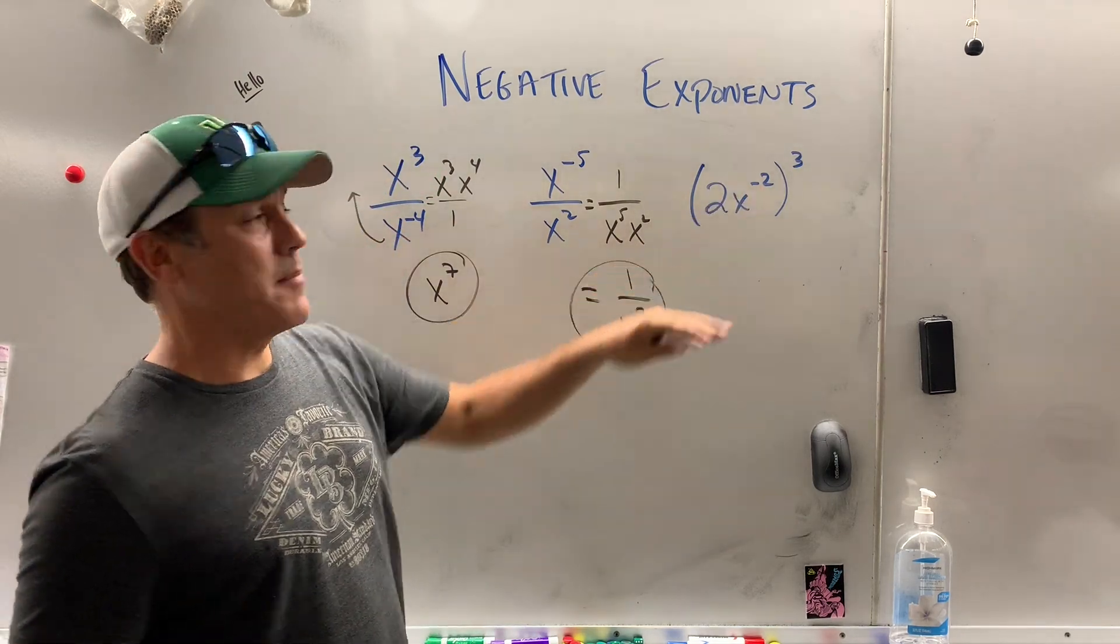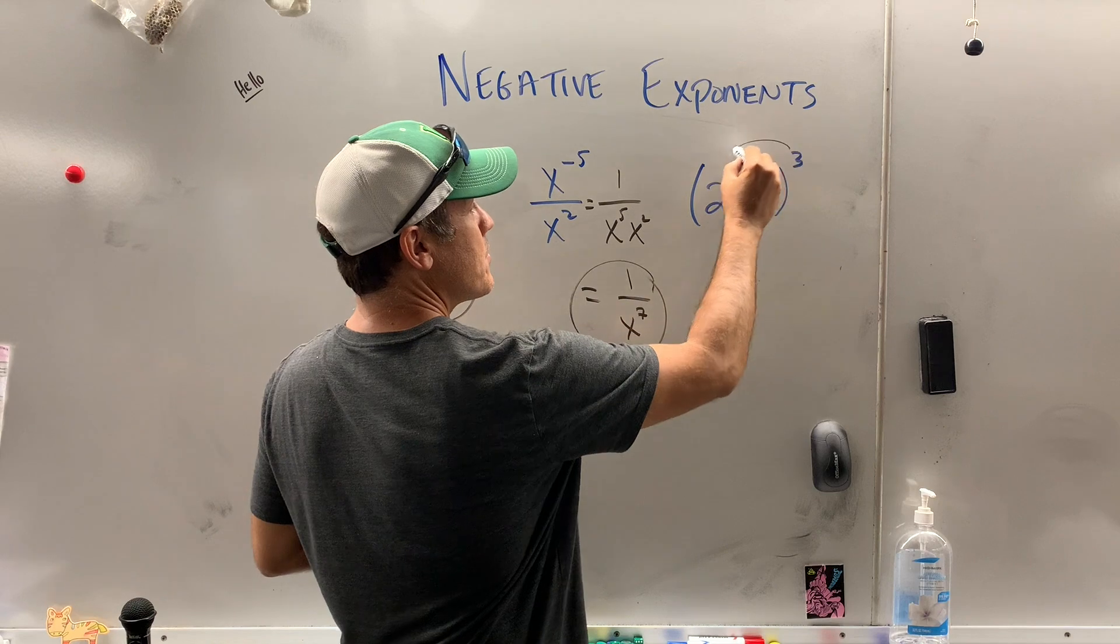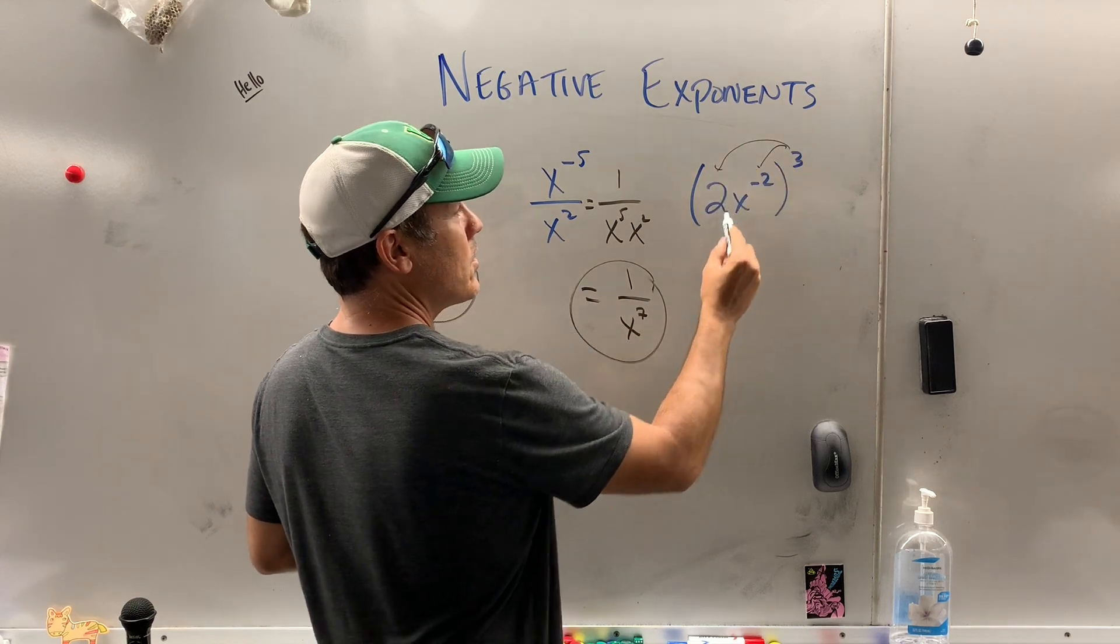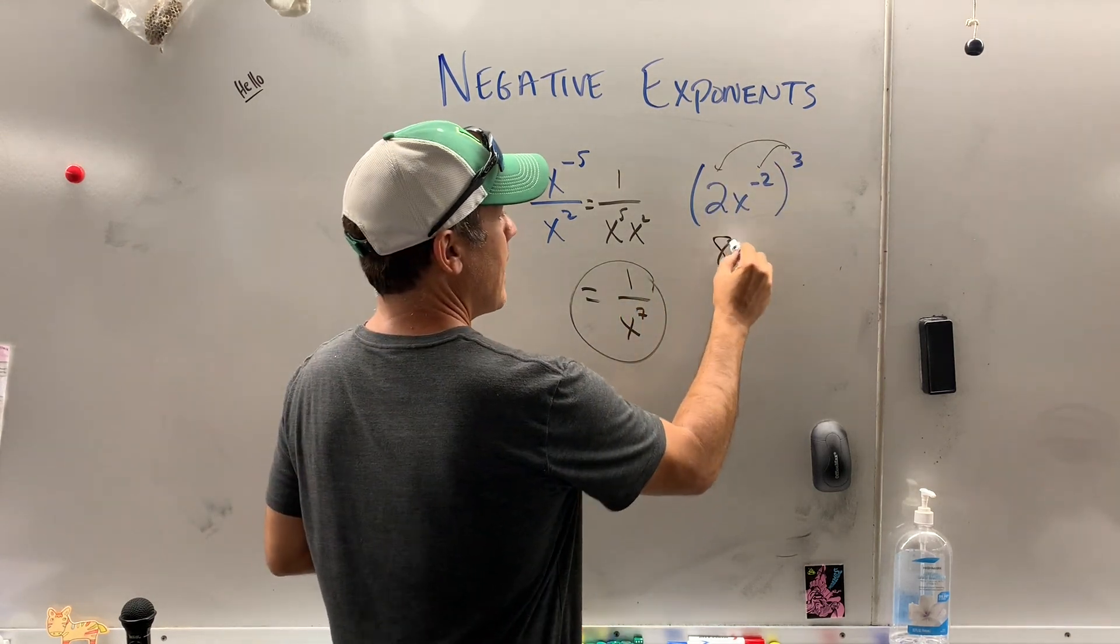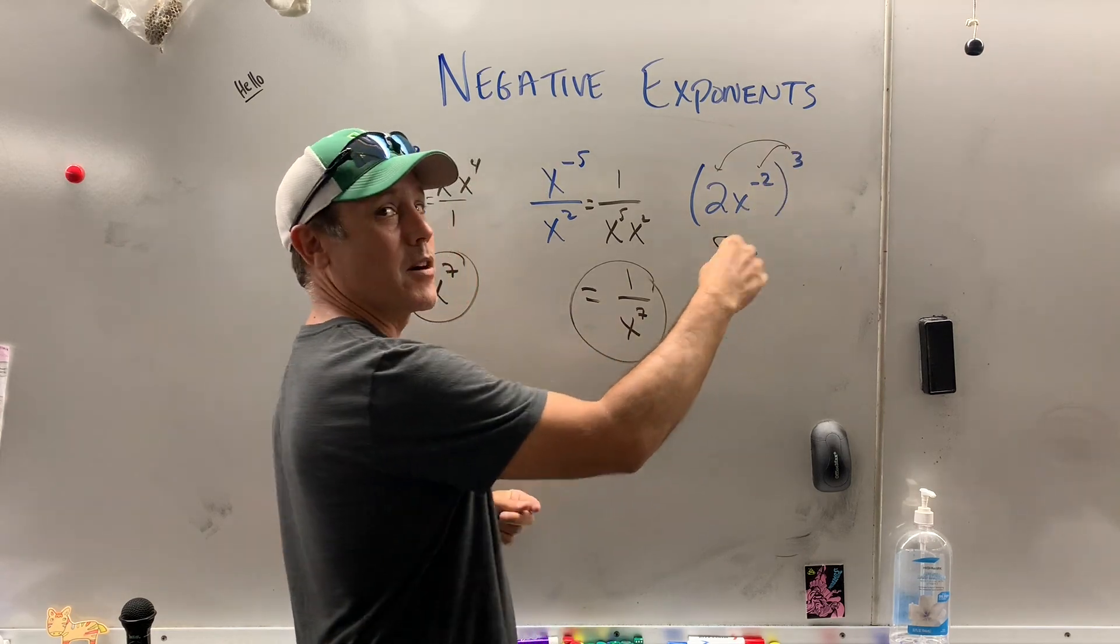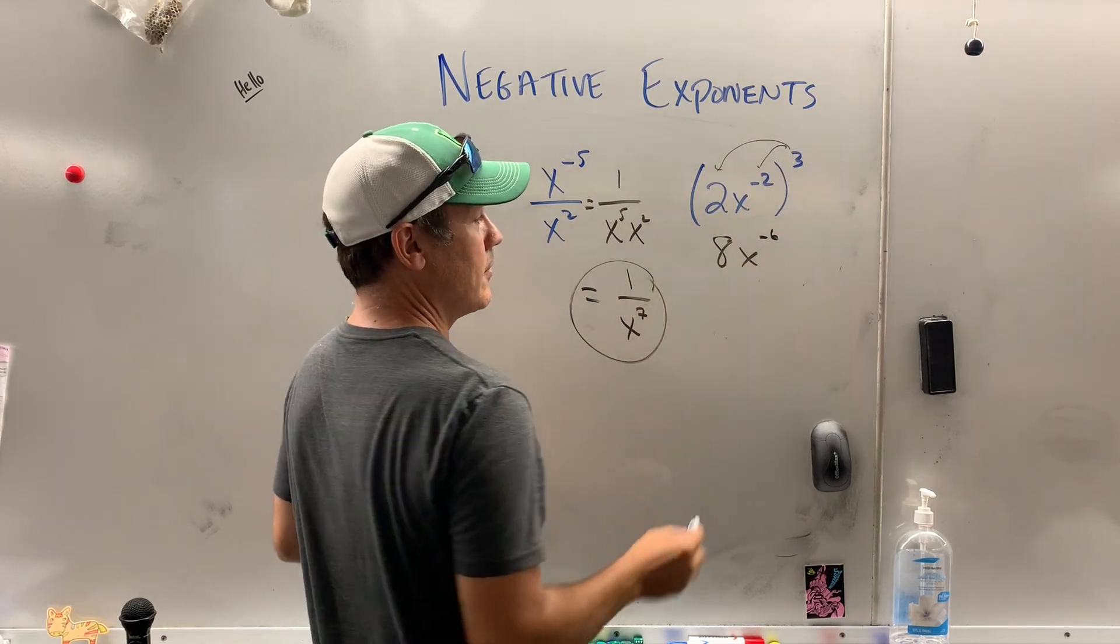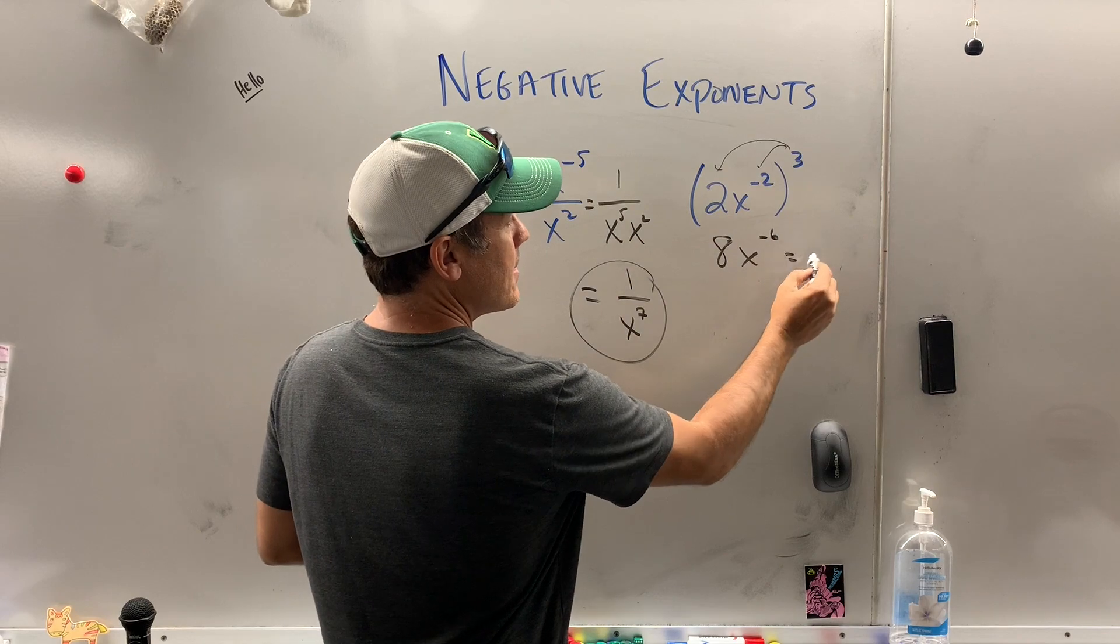This one seems a little more complicated. We gotta distribute that exponent. So 2 cubed is what? 2, 4, 8. 8x to the... when you raise to a power, you multiply exponents. Now, this equals what?